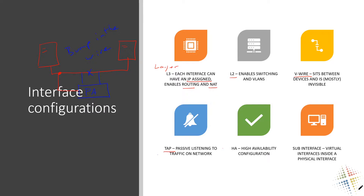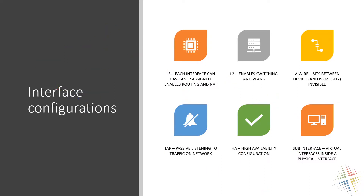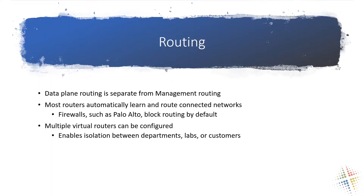If you have an environment where you want to inspect all the traffic — maybe to look for malicious activity or profile network activity — a tap is a great way to see what's going on. It's passive, so you can't use the Palo Alto to manipulate or craft traffic, but it does allow you to see it and report on it. Also available are high availability configurations and sub-interfaces, which bring back Layer 2 and Layer 3 concepts where you can configure VLANs and virtual interfaces inside physical interfaces.